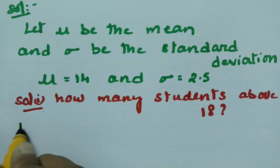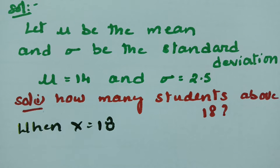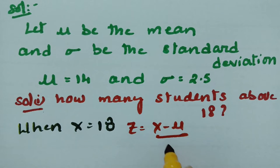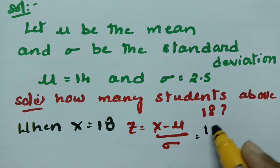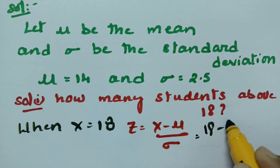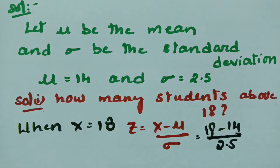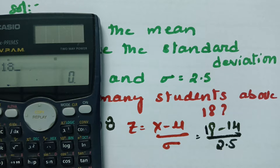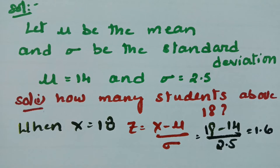Using the formula z = (x - mu) / sigma, substituting x = 18, mu = 14, and sigma = 2.5: z = (18 - 14) / 2.5 = 4 / 2.5 = 1.6. So the z-value for x = 18 is 1.6.